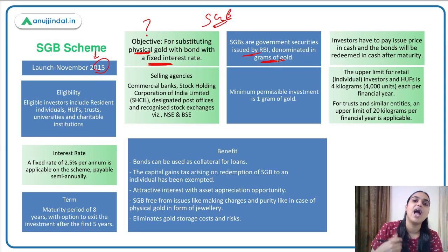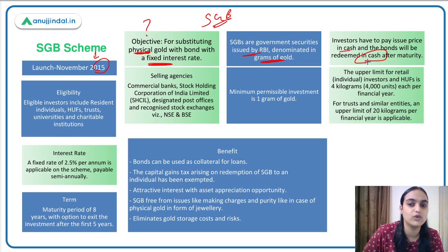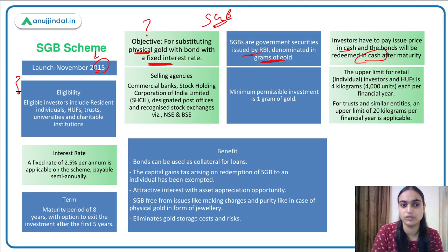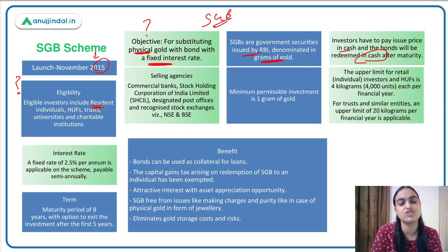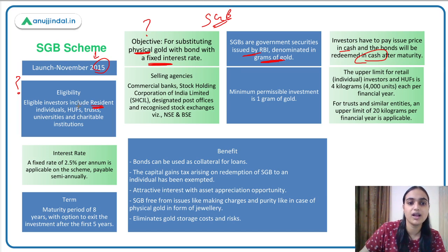Investors pay the issue price in cash and receive cash again upon maturity. Regarding eligible investors, all resident individuals can invest in these bonds — and that term 'resident individuals' is important. Other eligible entities include Hindu Undivided Families, trusts, universities, and charitable institutions. So all these entities can purchase Sovereign Gold Bonds.